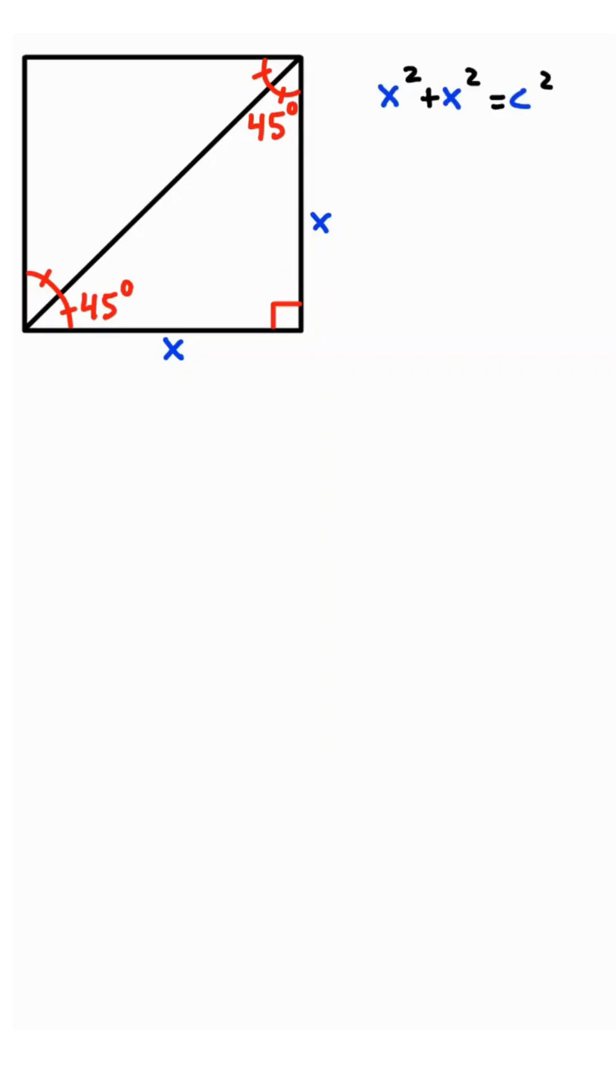What's the hypotenuse? Use the Pythagorean Theorem. We have x squared plus x squared equals c squared, or 2x squared equals c squared. Square root of both sides: square root of 2x squared is x times square root of 2, square root of c squared is c.